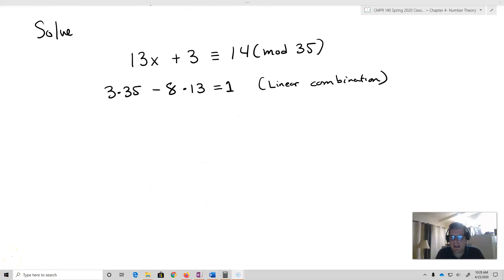Okay. So let's take 13x plus three is equivalent to 14 mod 35. So you'll notice that we've got modulo 35. Now from previously, we know that 3 times 35 minus 8 times 13 is equal to 1. So negative 8 is the inverse of 13 in modulo 35.